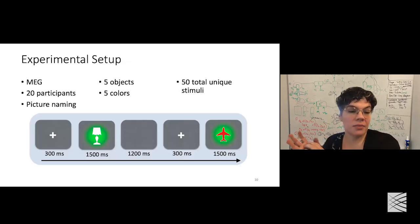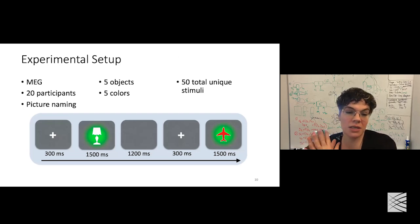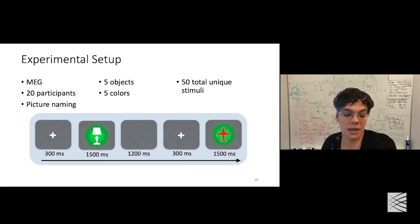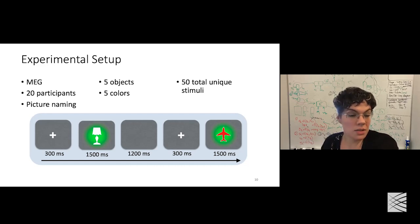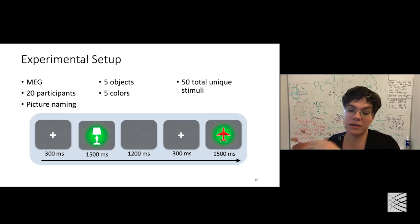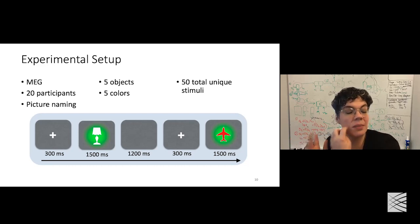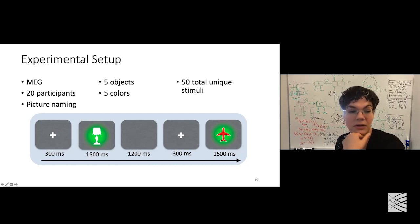The data is MEG collected for 20 participants doing a picture naming task, from a larger study on sign language versus spoken language representation. Only the English-speaking participants are used here. The pictures are shown on screen — for example, a white lamp on a green background or a red airplane on a green background. There are five different objects, five possible background colors, and five possible foreground colors, counterbalanced to create 50 total unique stimuli.